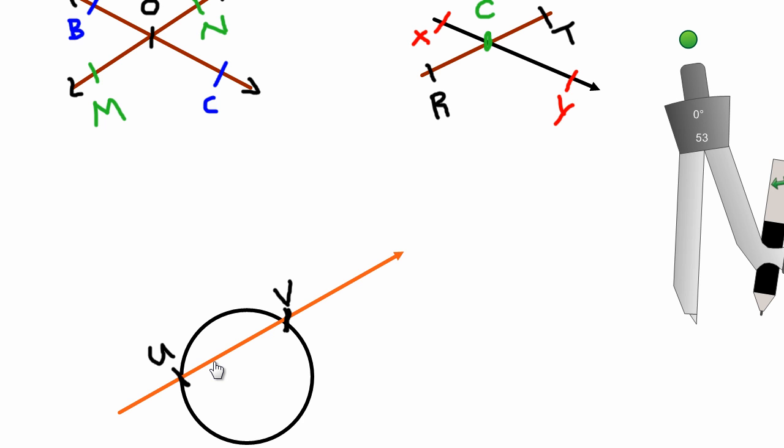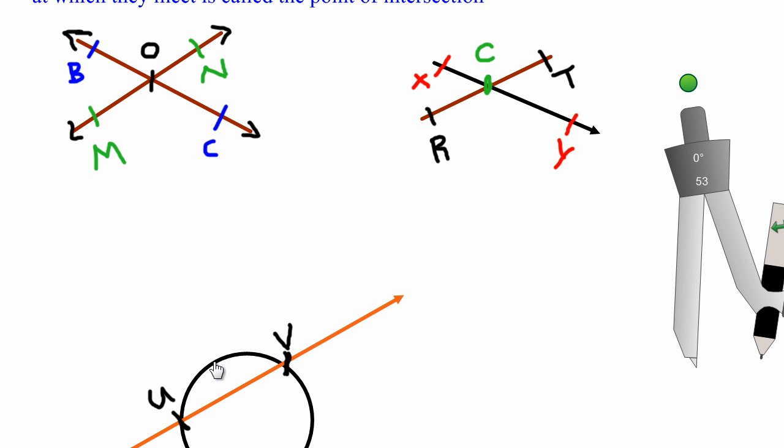So that's all we mean by intersecting lines, really. It's where two or more lines intersect an object, or rays intersecting lines, lines intersecting rays, as we have looked at these examples. Okay, bye-bye.